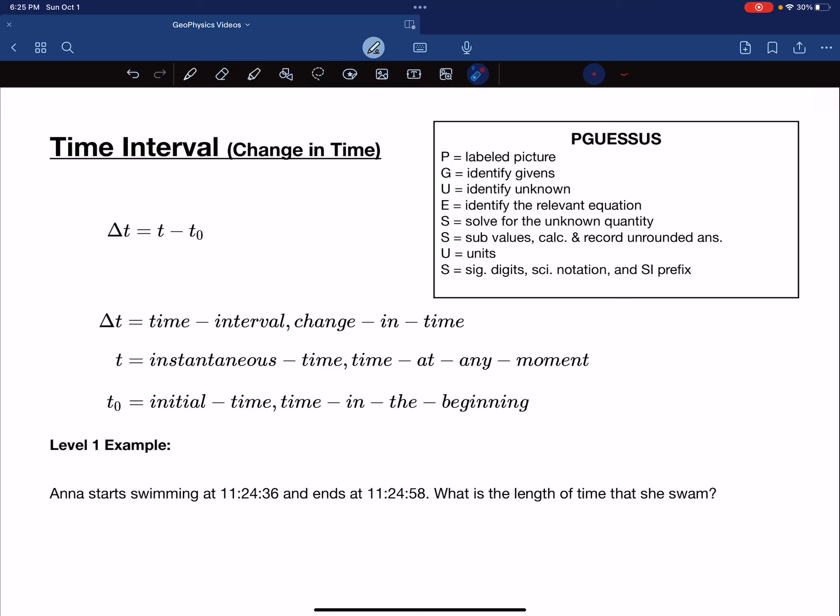This video is about calculating the time interval, or the change in time. The formula change in time is equal to the instantaneous time minus the initial time, or the start time.